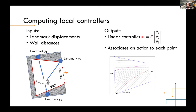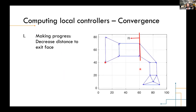All measurements, represented by variable y, are stacked into a vector, multiplied by the controller matrix K to produce control u. In practice, once K is fixed, you get a vector field over the environment. What you want is for that field to always avoid walls and always move toward the exit — so that wherever you start in the cell, you always move toward the next step in the high-level path.